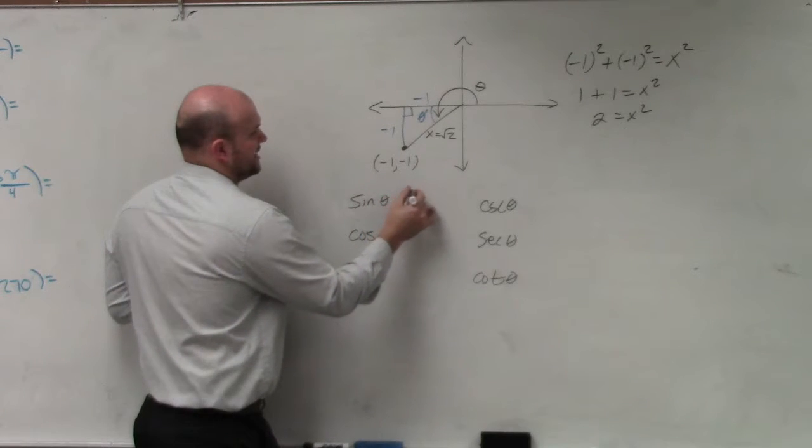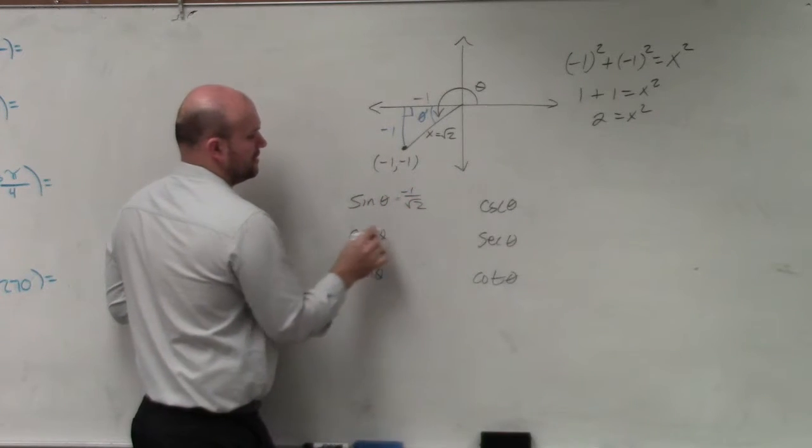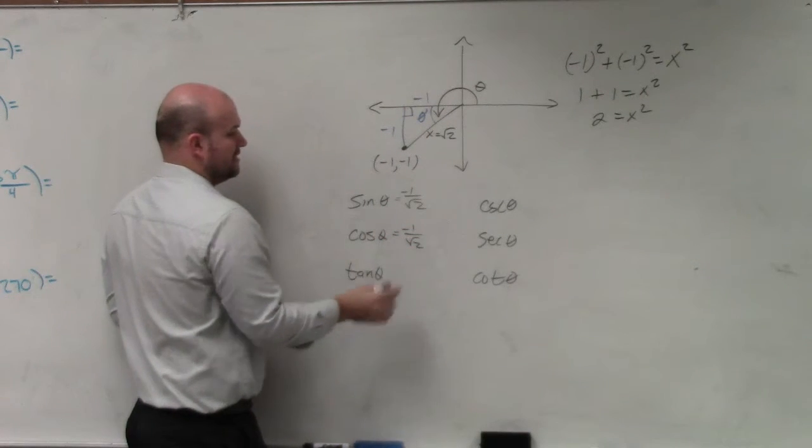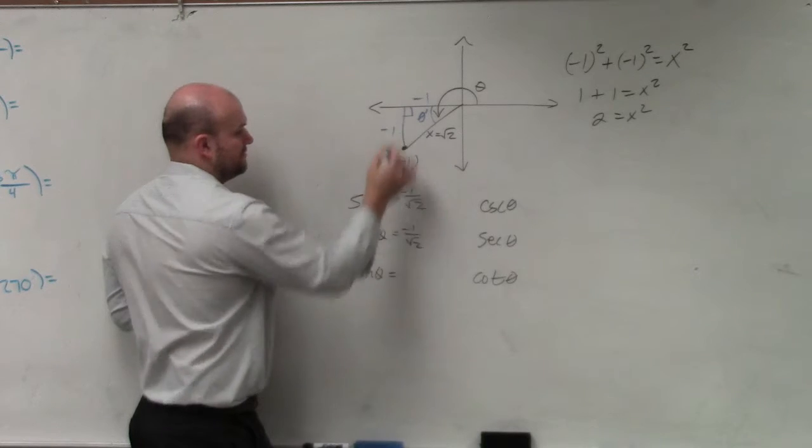So that's going to be negative 1 over the square root of 2. Cosine is adjacent over hypotenuse, negative 1 over square root of 2. Tangent is opposite over adjacent.